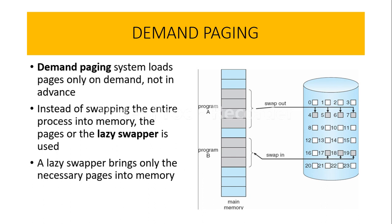Looking at the diagram, it shows the transfer of pages from the disk to main memory and vice versa. We have two programs. Pages not required by program A are swapped out — meaning removed from main memory and placed back onto the disk. Similarly, pages required by program B are swapped in. This is how the lazy swapper swaps pages in or out based on program requirements. This is the basic concept of demand paging.